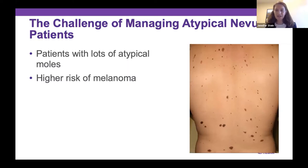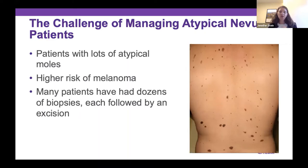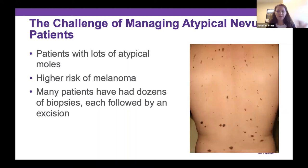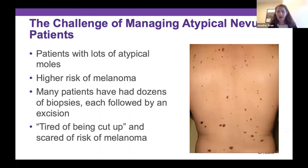A lot of these patients are used to the idea that every time they go to the dermatologist, they're going to get a biopsy — sometimes two — and a phone call saying it's not a melanoma but it's dysplastic, atypical, or Clark's nevus, whatever term you use. Then you call the patient back for another excision. These patients are getting dozens of procedures; they're scared and tired of being cut up. So what can we do to take the very best care of them, not miss a melanoma, but save their skin from unnecessary biopsies?